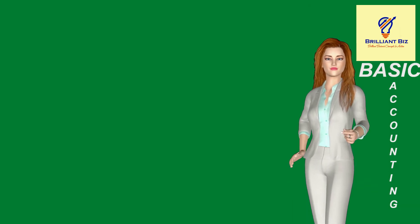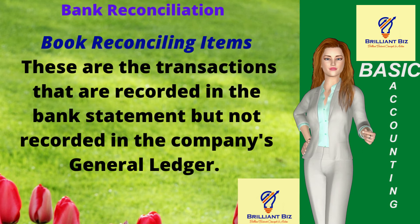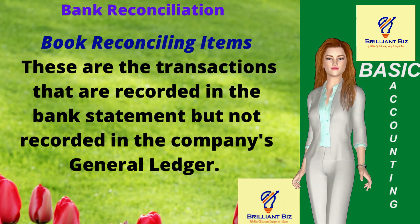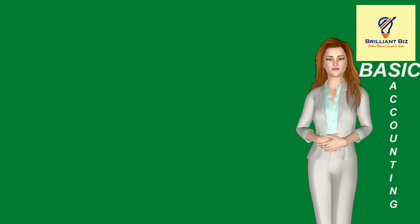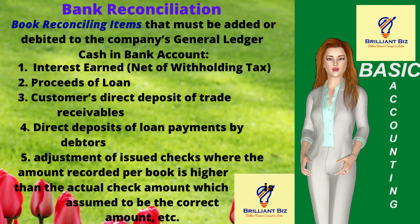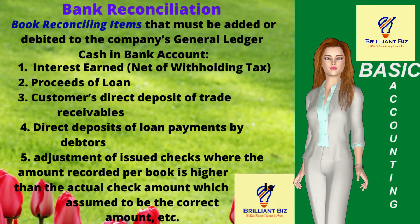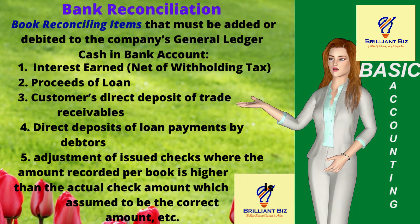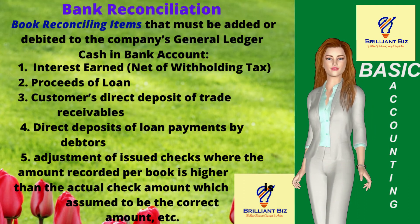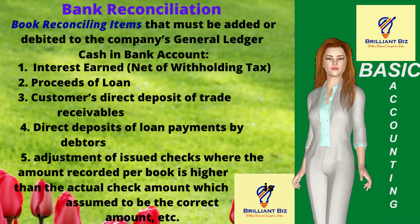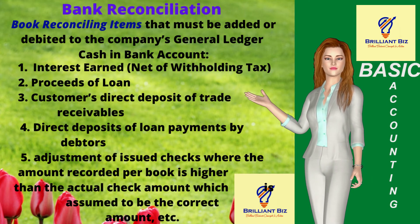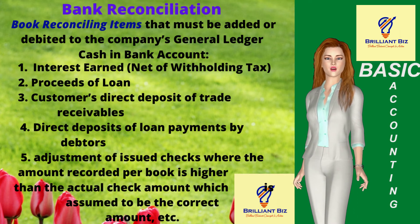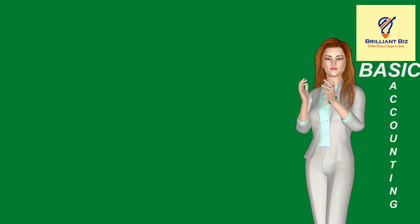Number ten: book reconciling items. These are transactions that are recorded in the bank statement but not recorded in the company's general ledger. The following are examples of book reconciling items that must be added or debited to the company's general ledger cash in bank account: interest earned net of withholding tax, proceeds of loan, customers' direct deposit of trade receivables, direct deposits of loan payments by debtors, and adjustment of issued checks where the amount recorded per book is higher than the actual check amount, which is assumed to be the correct amount.